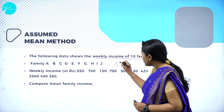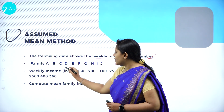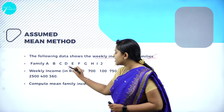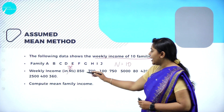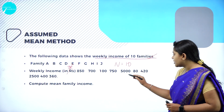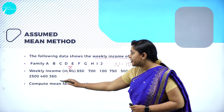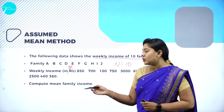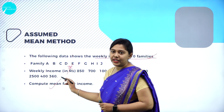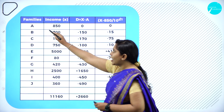The number of observations is 10. Let x represent the weekly income values: 850, 700, 100, 750, 550, 80, 420, 2500, 400, and 360. We need to compute the mean family income. We will set up columns for x (income) and d (deviation). The d-dash column will be used later for step deviation method.